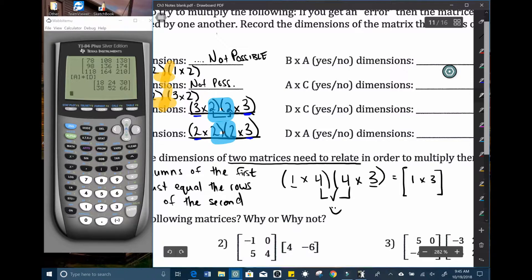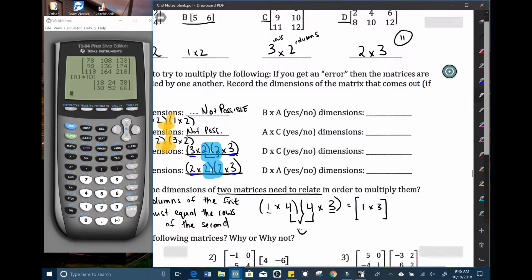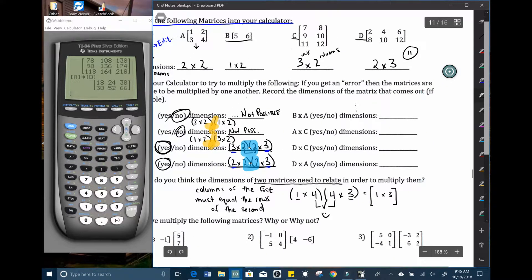Just really quickly, so we really don't even need to type these into the calculator. We can just determine by looking at them if it's possible to multiply. So B times A, B times A would be taking a one by two and multiply it by a two by two. That one is going to work and we'll be left with a one by two matrix.